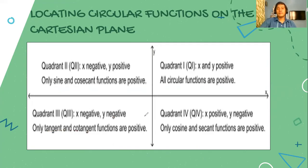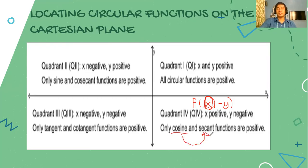And lastly, for the fourth quadrant, the trigonometric point P has coordinates x and negative y. So obviously, it is the cosine, which is our x value, that is positive. In the same way, its reciprocal — the secant function — will also be positive. Meaning the sine function, the cosecant function, the tangent function, and the cotangent functions are negative.